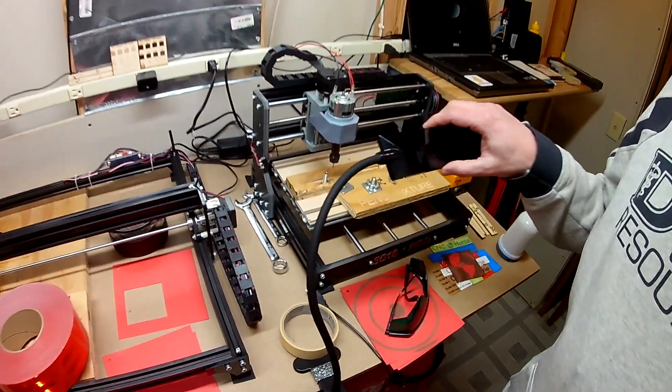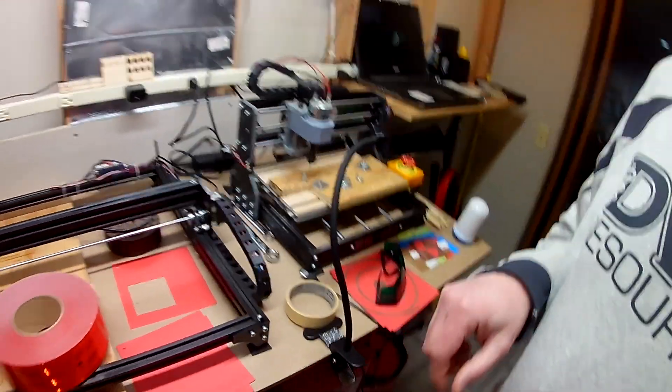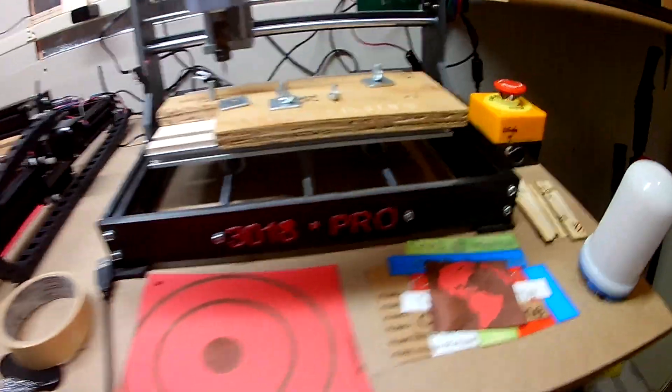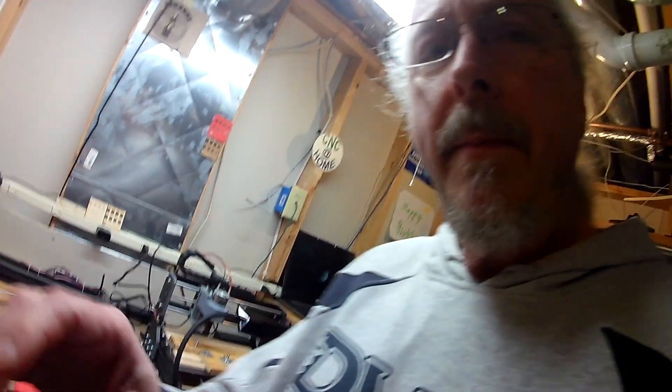Hi, AT from CNC at home. One of the projects that I've done with the Genmitsu 3018 router is I've taken this 3M reflective tape and run it through the router. One of the cool things is you can create nice little letters like I've got here. I have some out on the mailbox and that works pretty well.